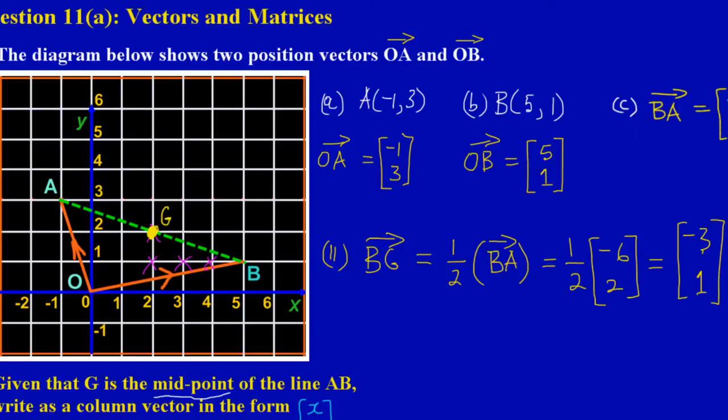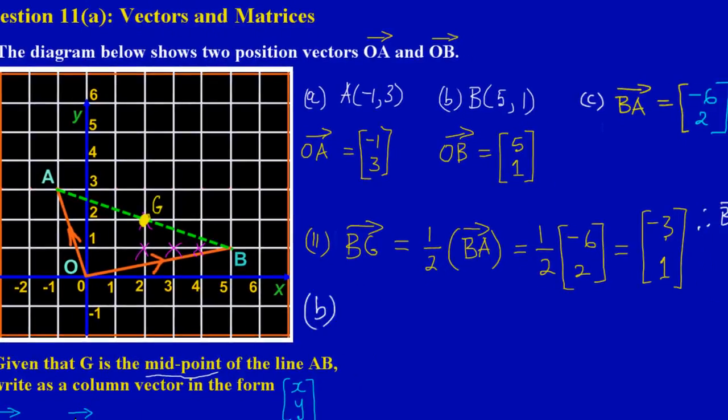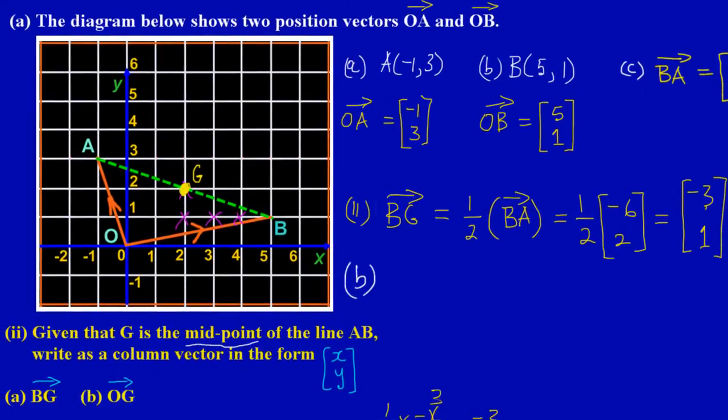So there we go, we found BG. They're asking us to find OG. Again, we are just simply going to position ourselves at the origin, which is O, so from my origin I'm going to move to the point G. Obviously from my origin I would have to move my x value to get to G, in a right direction.